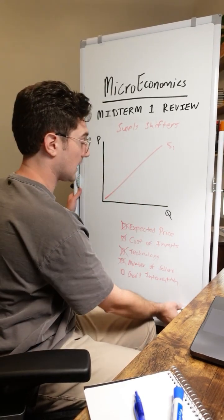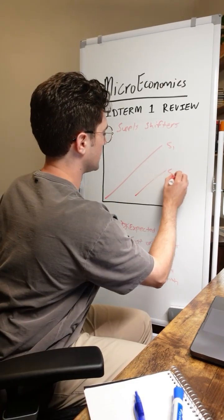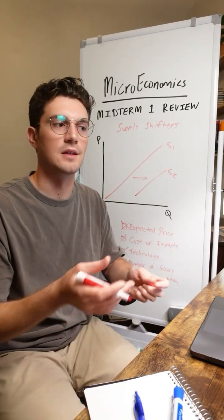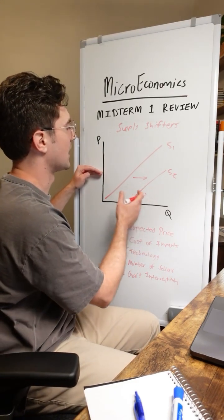And on the inverse here, if the government decreases their taxes on producers, that will increase supply. Because now it's less costly for the firms to produce as many units as before. They can output more units at the same price levels as before.